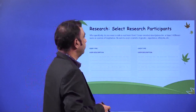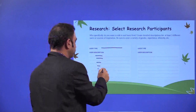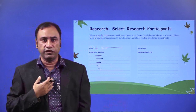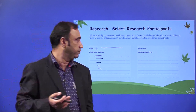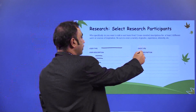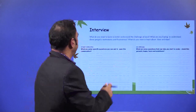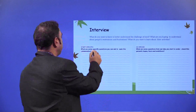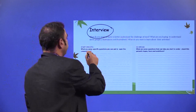Who specifically do you want to talk with and learn from? If you have multiple user types, describe each one. For example, for a gaming app with multiple sports, one user might love cricket, another football, another hockey — so user types differ depending on choice and requirement. Define all user types and their descriptions. Then the interview process starts. What do you want to learn to better understand the challenge at hand? What are you hoping to understand about people's motivations and frustrations, and about their activities? List all the specific questions you can ask to open the conversation.